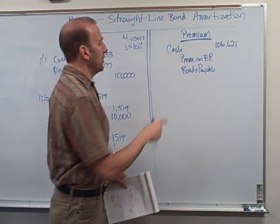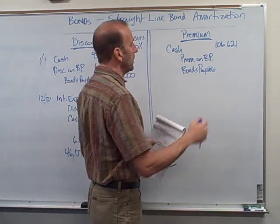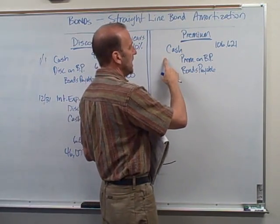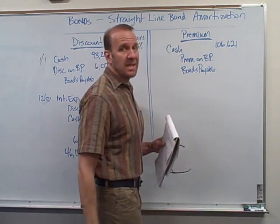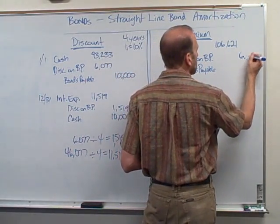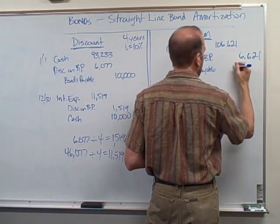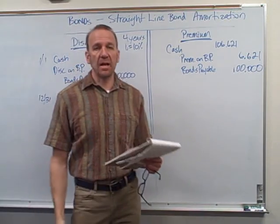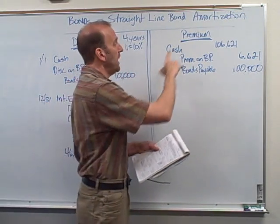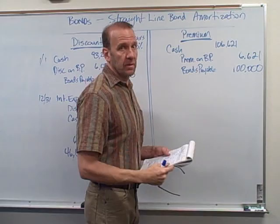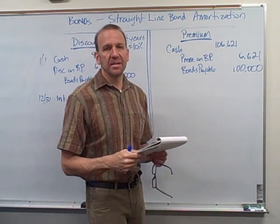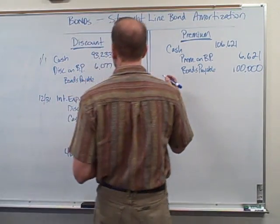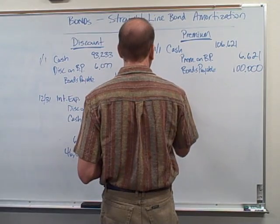Now, if the bond happens to sell at a premium — it's going to sell over the principal amount, the face value of the bonds. In this example I've got a premium and it's going to sell for a hundred and six thousand six twenty one. So my premium is six thousand six twenty one, and my bonds payable is going to only pay at a hundred thousand at the end, just like the discount example, except people are willing to pay more for this one because the contract rate — the stated or nominal rate — is more than the market rate. So this is January 1st and it sells for a premium.